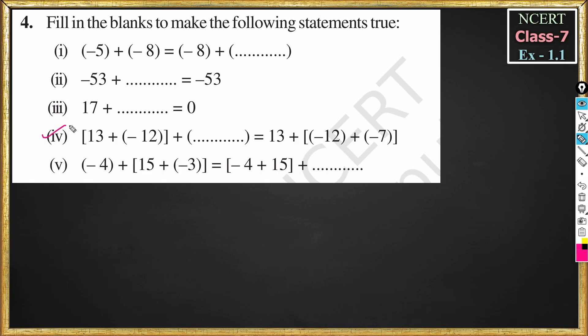Question 4: 13 plus minus 12 plus dash is equal to 13 plus minus 12 plus minus 7. In the form a plus b plus c, this equals a plus b plus c, which is called the associative property for addition of integers. According to this property, c is nothing but minus 7, so minus 7 is the answer.